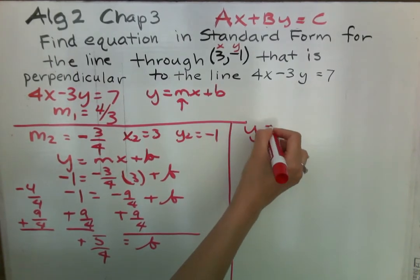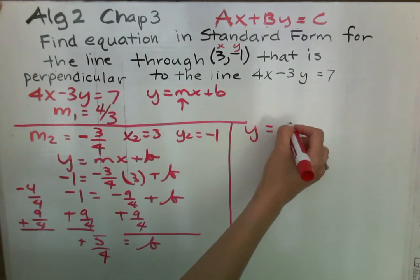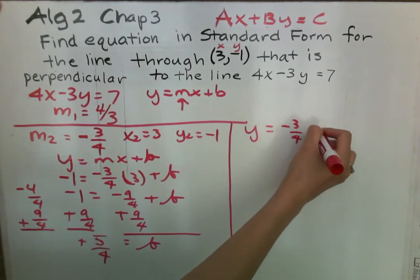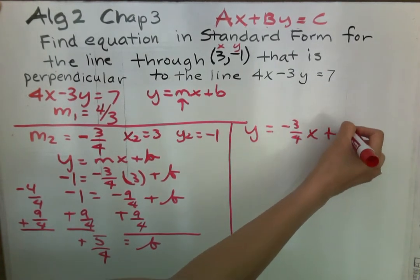We have y equals, and again the slope is negative 3 fourths, x plus 5 fourths.